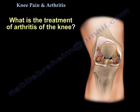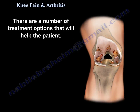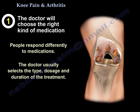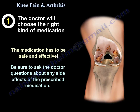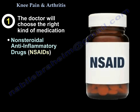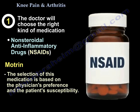So what is the treatment of arthritis of the knee? There are a number of treatment options that may help the patient. The first thing the doctor will choose is medication. People respond differently to medication. The doctor usually selects the type, dosage, and duration of treatment. The medication has to be safe and effective. Ask your doctor about the side effects. One of the medications is non-steroidal anti-inflammatory drugs — for example, Motrin. The selection is based on physician preference and patient susceptibility.